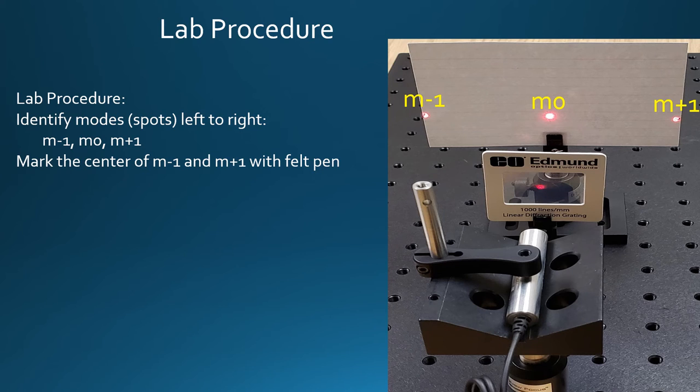As you can see in this slide, we have M-1, M0, and M+1 shown with the laser beam spots. What we need to do now is mark the center of each one of those to the best of our ability with some sort of a marking pen, like a felt pen. A very small felt pen is the best and get the dead center the best you can.